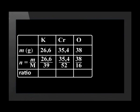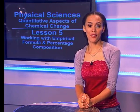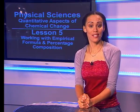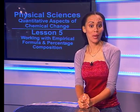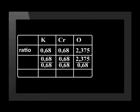The ratio is therefore 0.68 potassium to 0.68 chromium to 2.375 oxygen. The second step is to simplify the ratio by dividing by the smallest value. The smallest value is 0.68, so we divide each number by this value. This gives us a new ratio of 1 to 1 to 3.5.